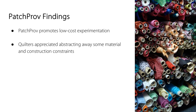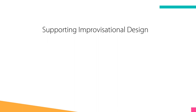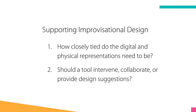Quilters also appreciated abstracting away some material and construction constraints to focus on the visual design. Based on these insights from designing Patchprov, we think there are some questions to consider when looking to support improvisation. How tied the digital and physical representations need to be, and how much of an active role the tools should play in the design process, likely depend on the creation time and physical scale of the finished artifact. We chose to take a lightweight approach, providing relatively few design suggestions, but there are likely other domains in which a more active approach may work well. We have shown the possibility of supporting improvisational design for quilting, and we hope that our project will encourage future work on supporting improvisation in quilting and beyond.